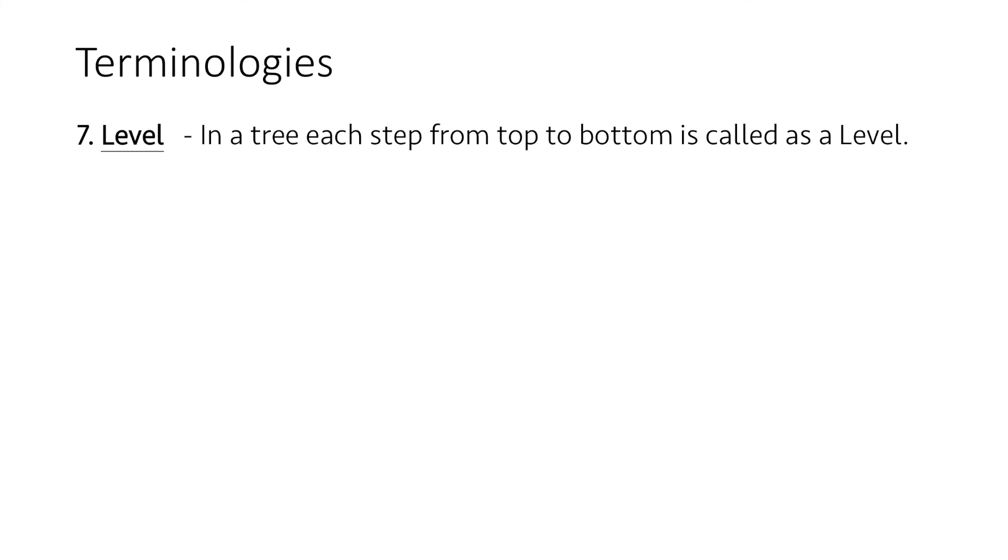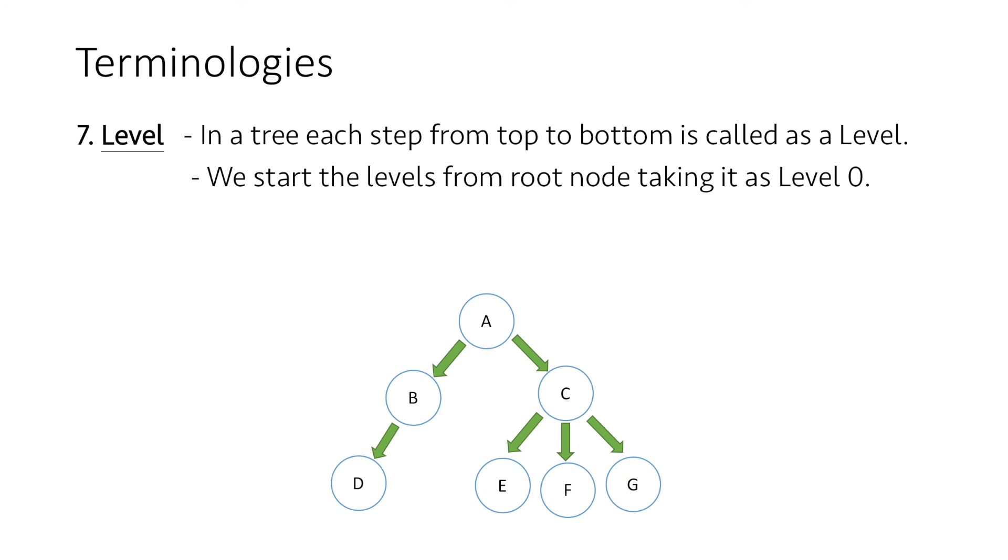Lastly, let's talk about level. In a tree, each step from top to bottom is called a level. We start the levels from the root node taking it as level 0. In our example, node A is at level 0.